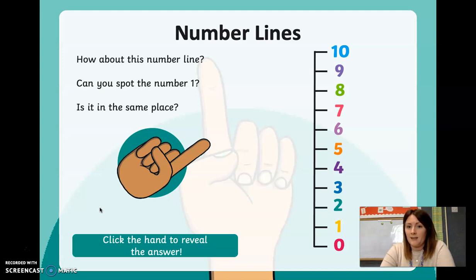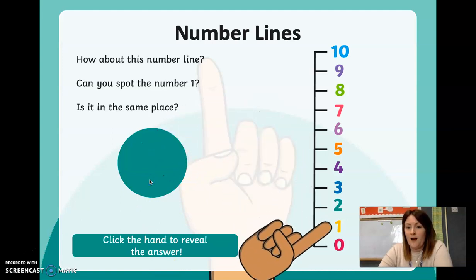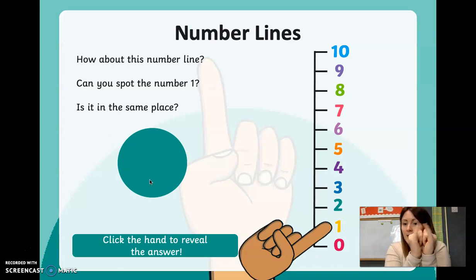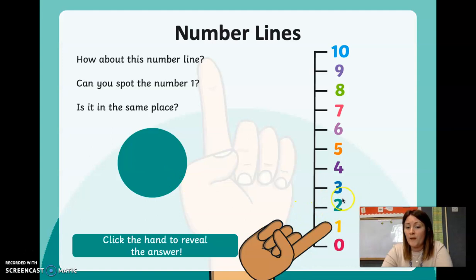How about this number line? Looks a bit different, doesn't it? Can you spot the number one on here? Is it in the same place as last time? I'm going to click the hand to see if you've got it right. There it is — the number one is yellow again and it is in the same place, next to number two and number zero, with number one in the middle.